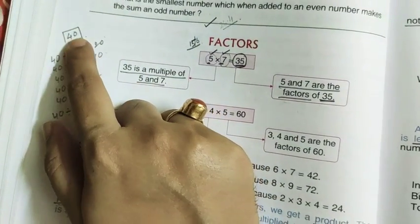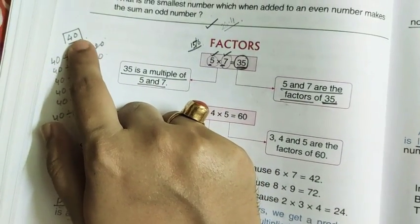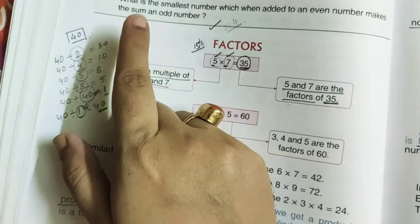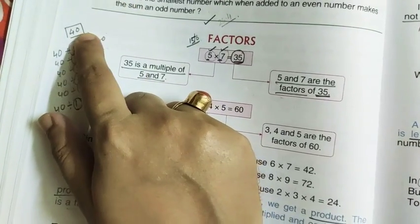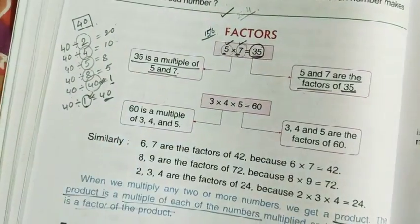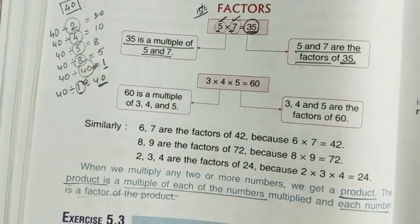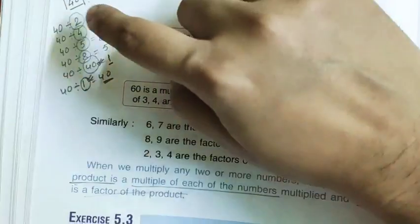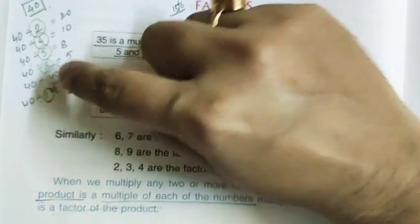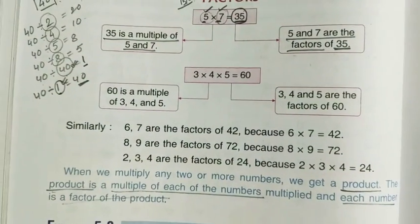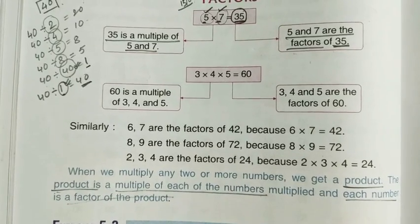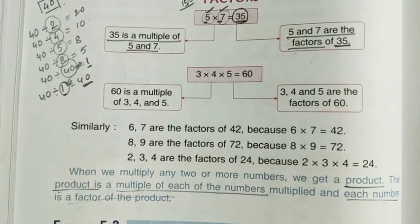I am giving the number 40. Which numbers divide 40? Those are known as the factors of 40. Here, 2, 4, 5, 8, and 40 itself — these numbers divide 40 perfectly.